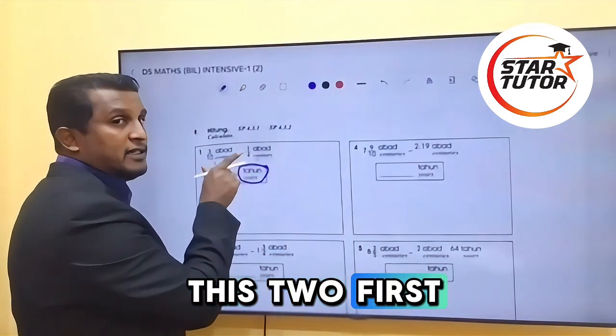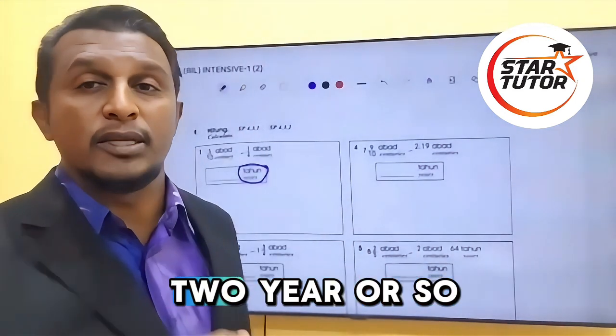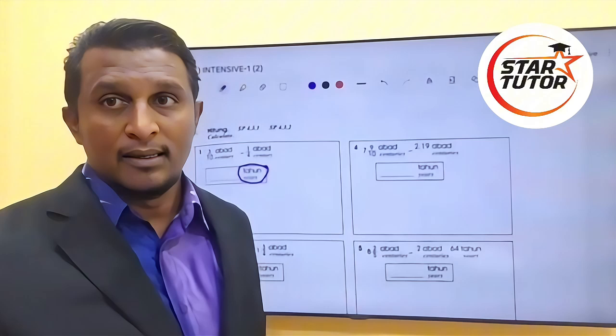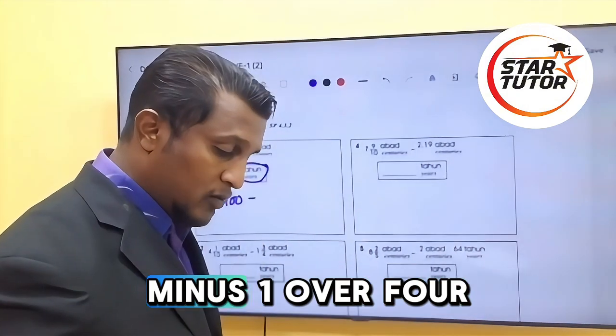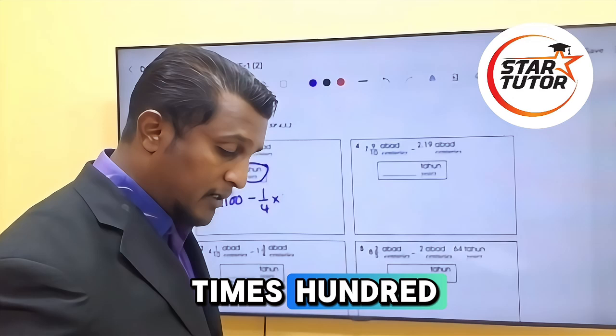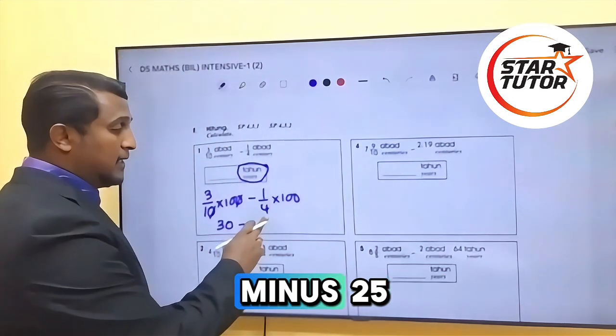want to minus these two first, then you want to convert to years - also can. But as long as your answer should be in the year. Okay, minus one over four times hundred, what will be minus twenty...